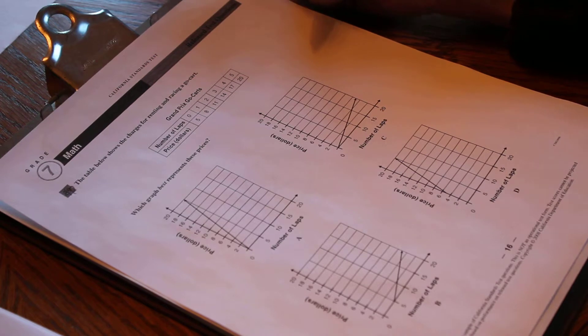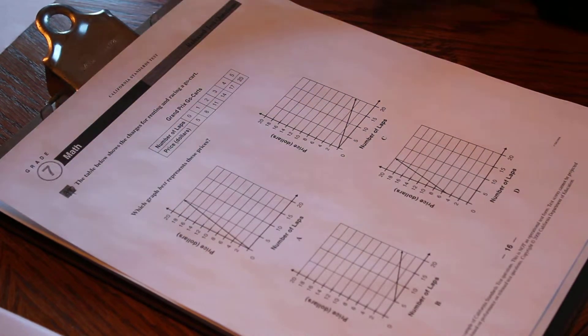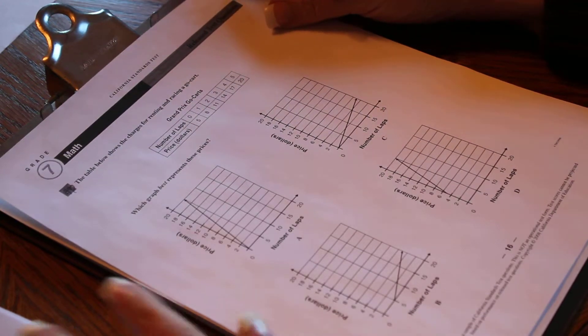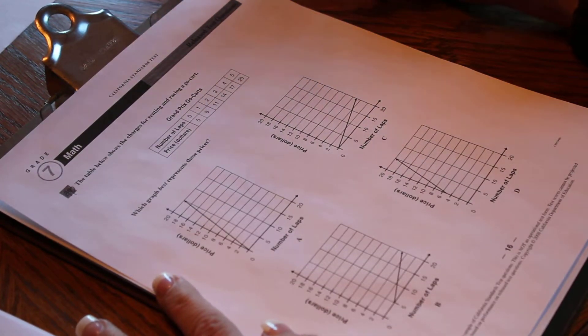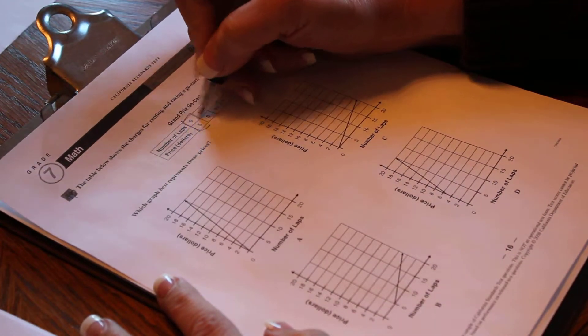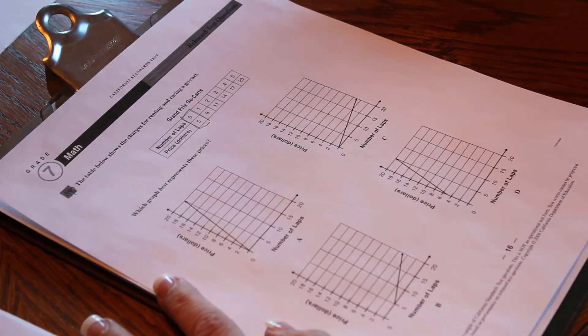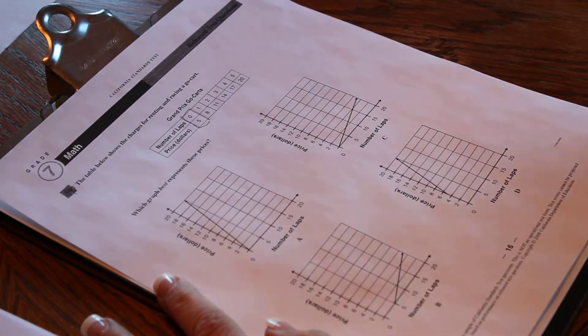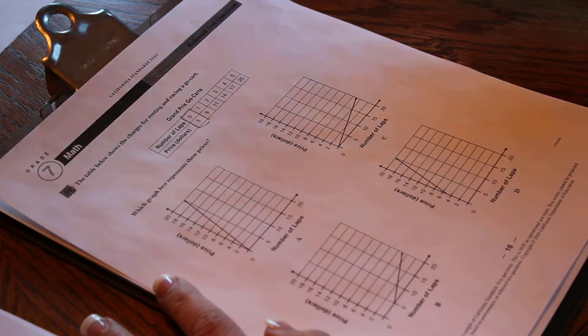Now renting a go-kart means I'm going to pay a fee just to rent the go-kart. Now racing a go-kart means you're going to be charged for each lap you use. So you can see here with zero laps, you still have to pay $5. So in order to get the machine out of the gate you have to pay $5.